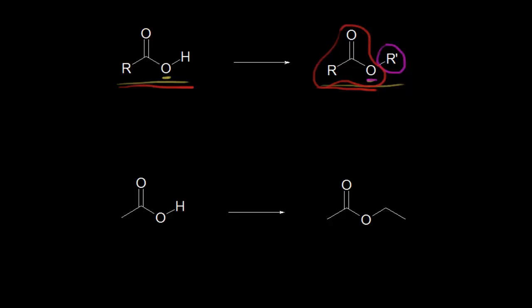Let's go ahead and do an example. If we're going to name this ester, we look at the R' group and name that as an alkyl group. That's a two-carbon alkyl group — here's one carbon and here's the second carbon. A two-carbon alkyl group would be ethyl, so we write ethyl to start with.